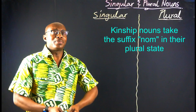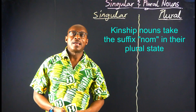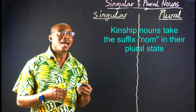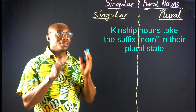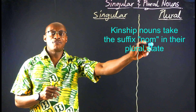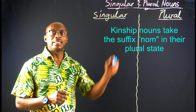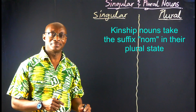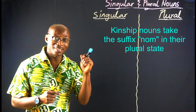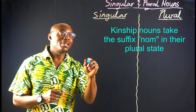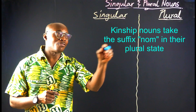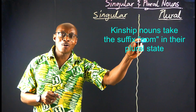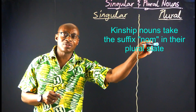Now we go to kinship — those that we have family ties with. For them, in the plural form, each will take the surface noun. So I'll take it once again: with this group of nouns, in the plural form, they all take the surface noun.